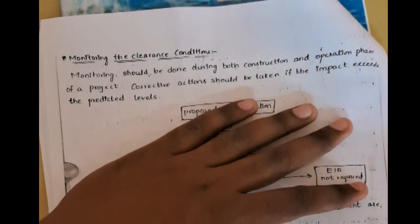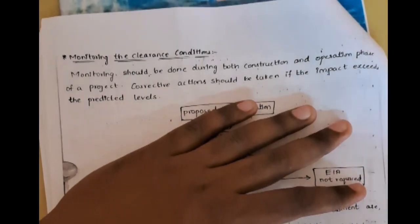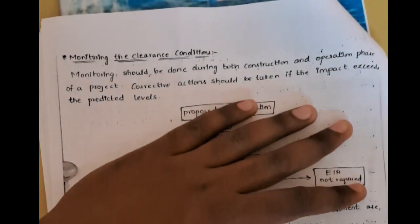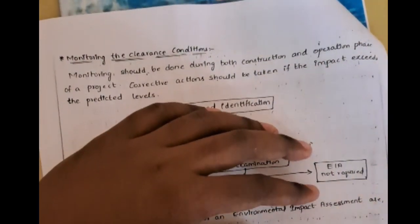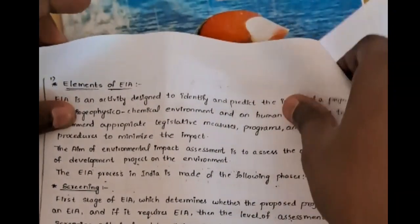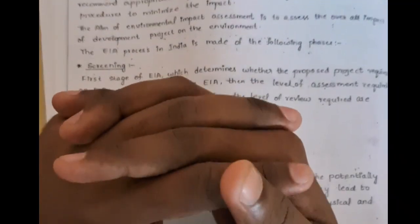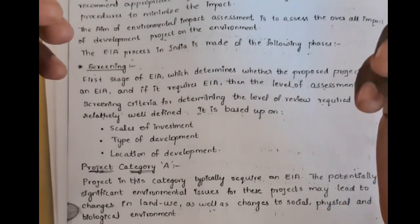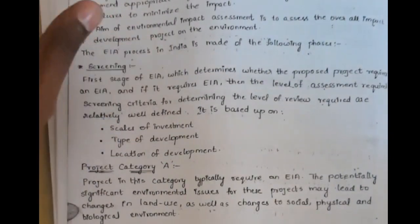A certain amount of chemicals or pollution may be predicted and acceptable, but monitoring is needed during the operation phase to ensure standards are maintained. I hope you have a clear idea about the elements of environmental impact assessment. If you find this video helpful, please share it with your friends. Thank you all.